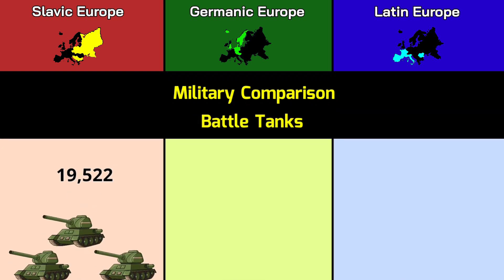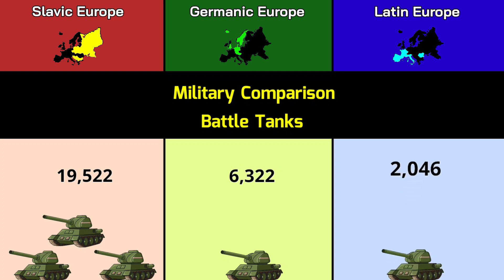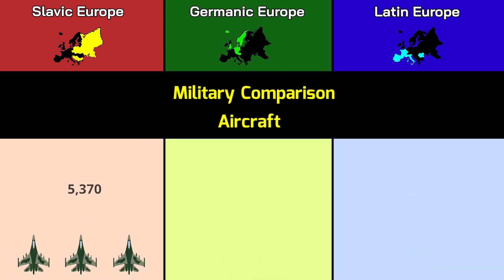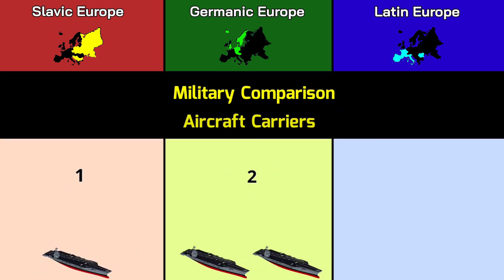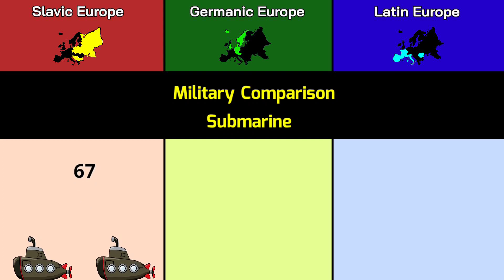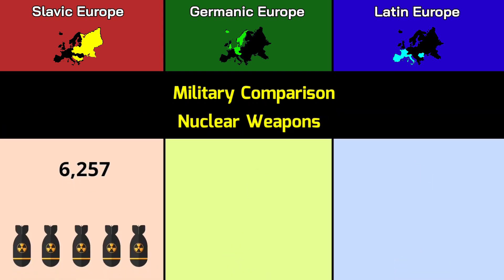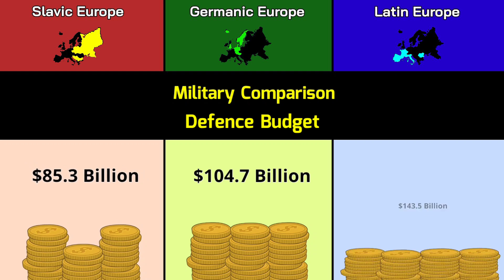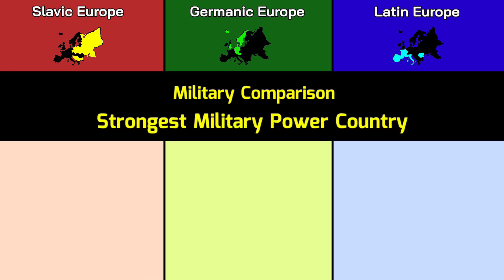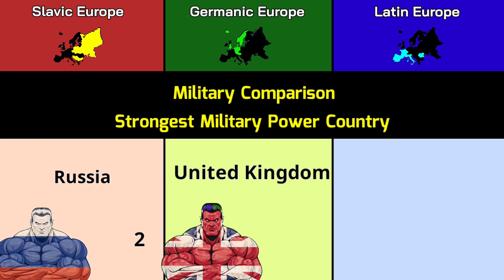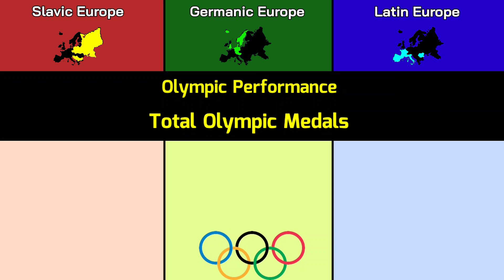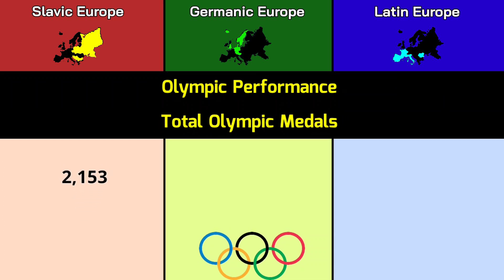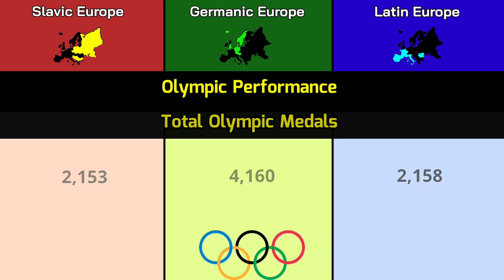Battle tanks: 15,522, 6,322, 2,046. Aircraft: 5,370, 1,768, 2,642. Aircraft carriers: 1, 1, 2. Submarines: 67, 19, 22. Nuclear weapons: 6,257, 225, 290. Defense budget: 104.7 billion dollars, 85.3 billion dollars, 143.5 billion dollars. Strongest military power by global military ranks: Russia 2nd, United Kingdom 8th, France 7th.